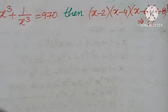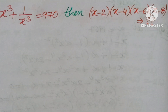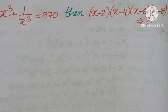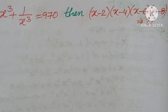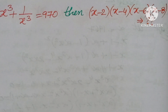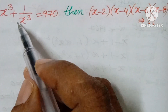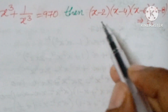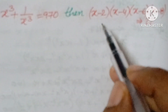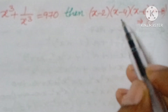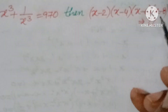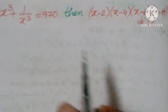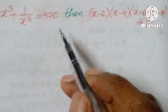Hello, welcome back to NCG Max. Today we are going to see one logical question. The question is: if x³ + 1/x³ = 970, then find the value of x minus 2, x minus 4, x minus 5, and x minus 8.